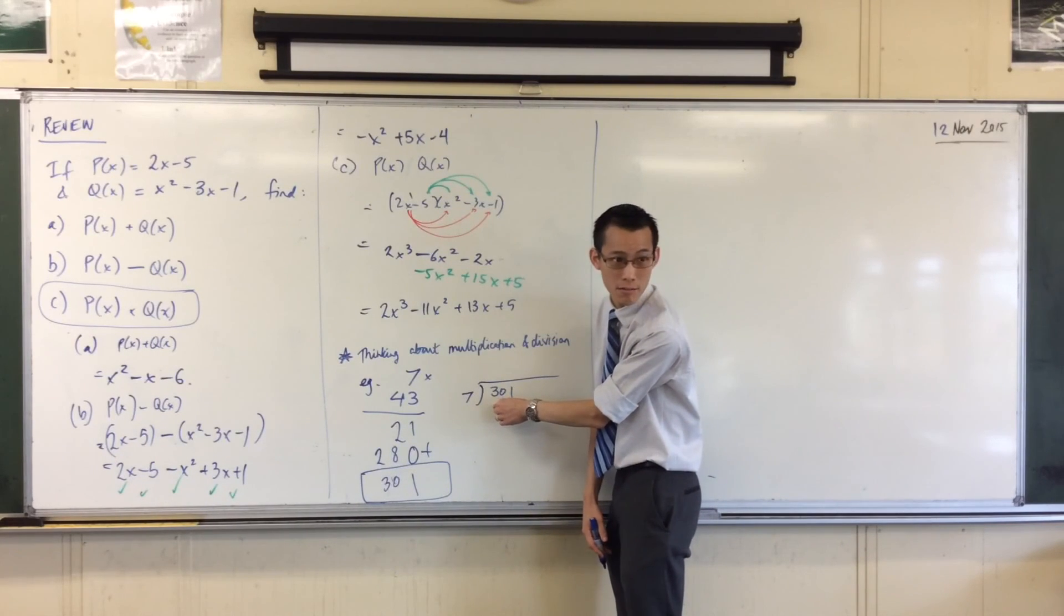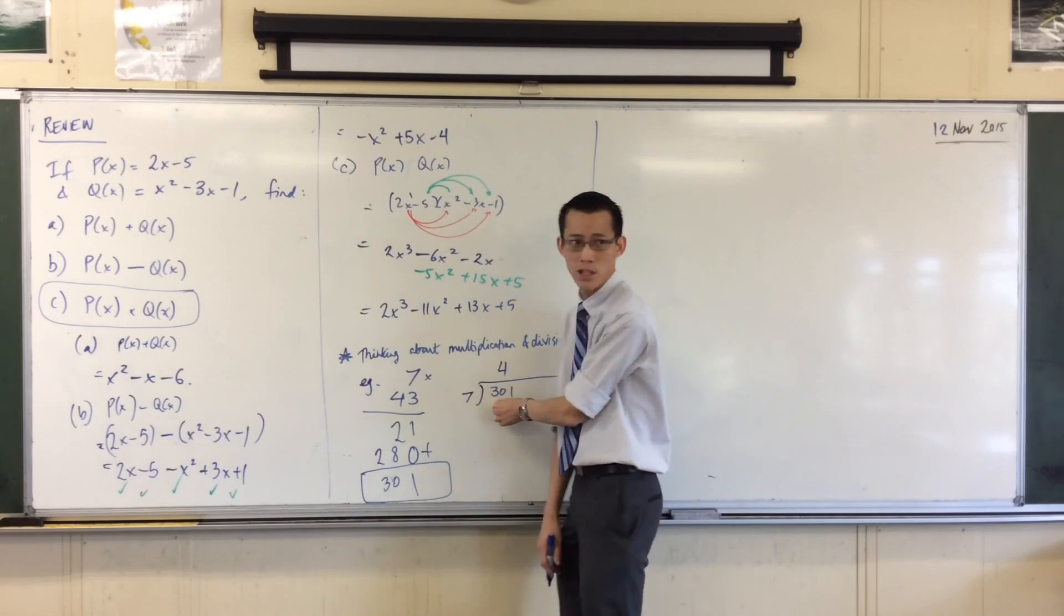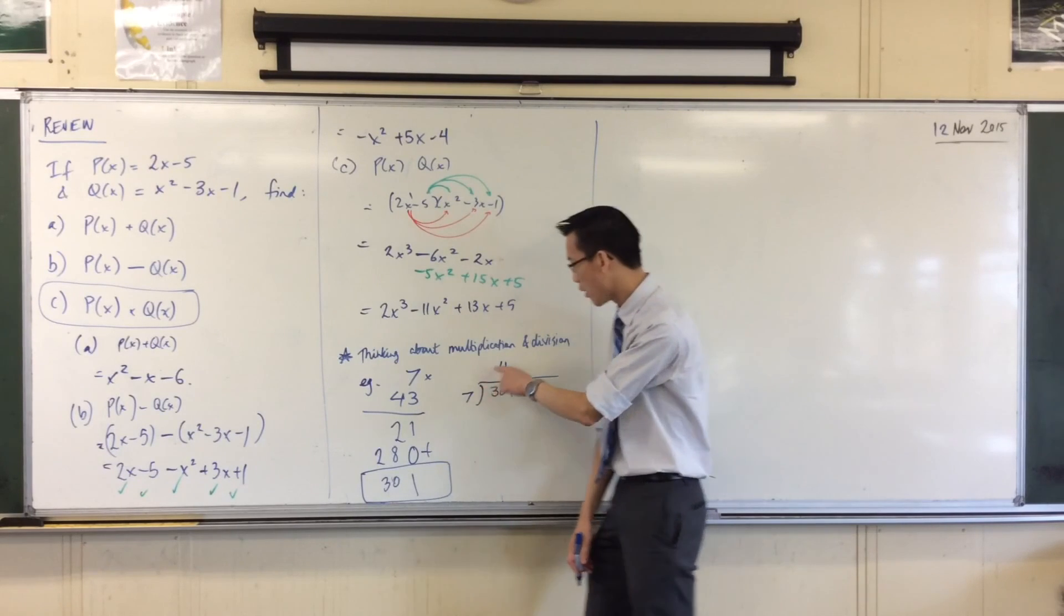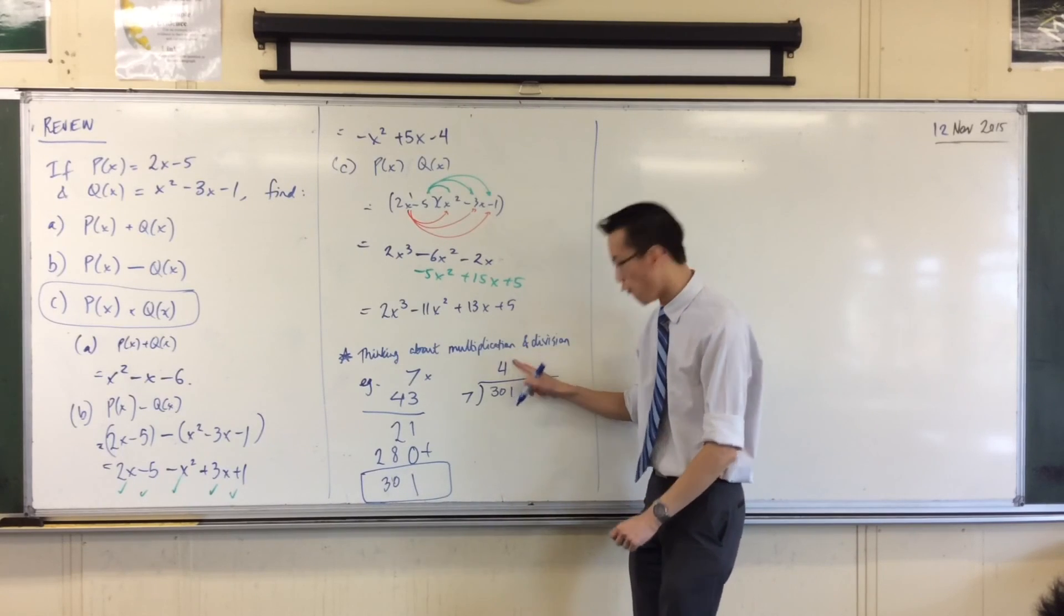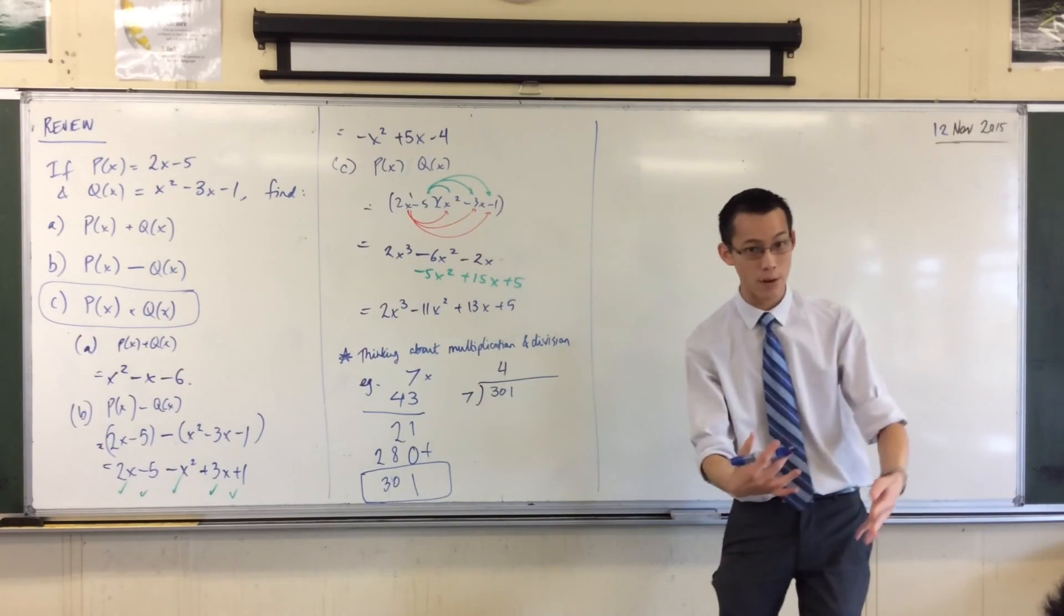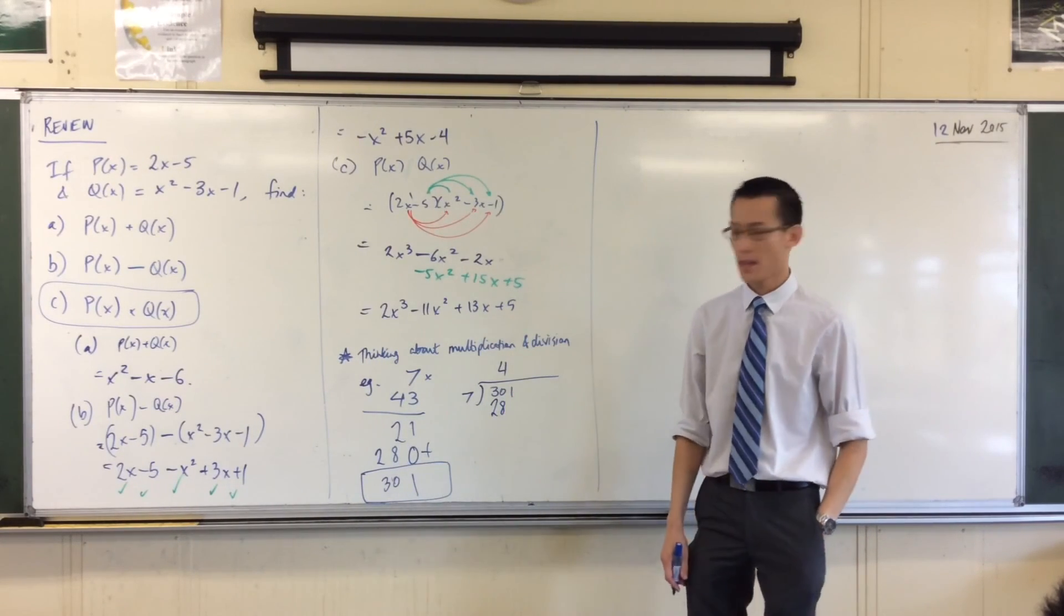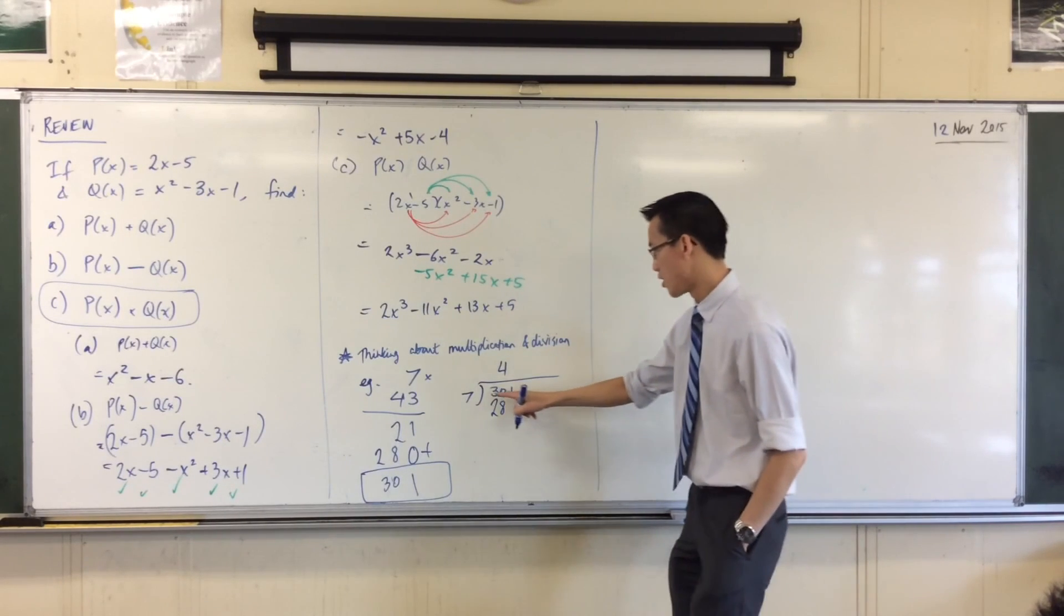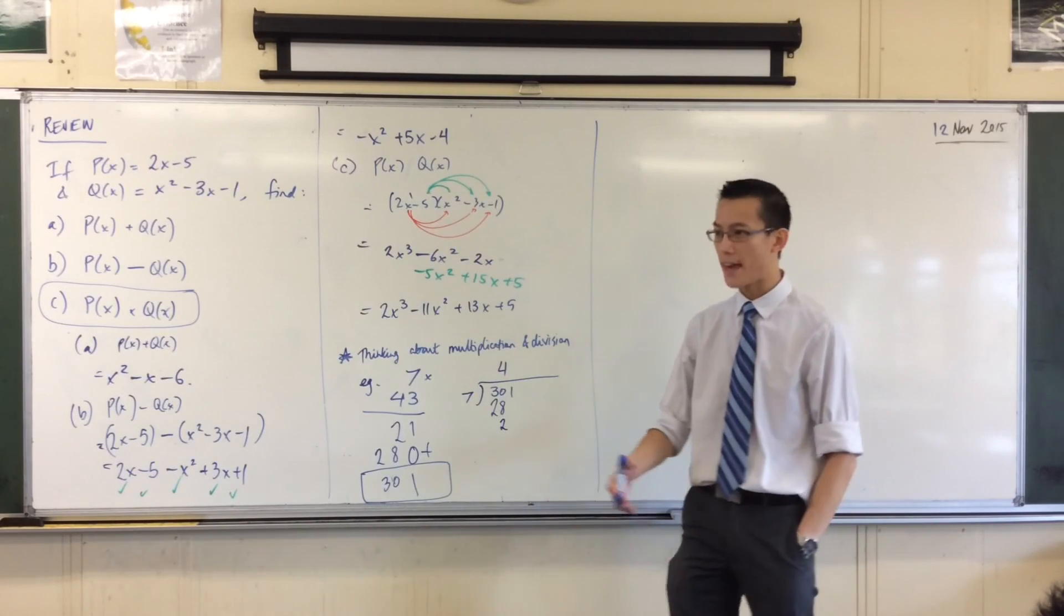Can I get any 7s out of that? And the answer is yes, I can. I can get 4 of them. So, you say 4 up here. What do you do with that 4? You write it below 30. I'm going to write a number below 30, but the number I'm going to write is not 4, but 4 7s. That's how much of that 30 gets taken out when I divide it by 7. 4 7s, of course, it's 28. So, what do I do with this 28? Subtract. So, I say 30 take away 28 is 2.